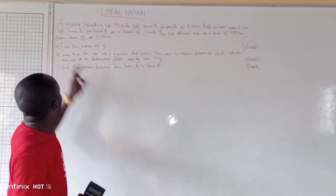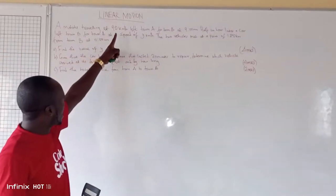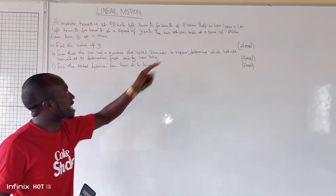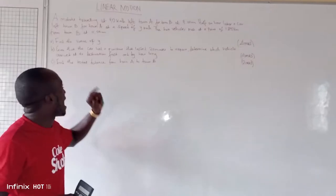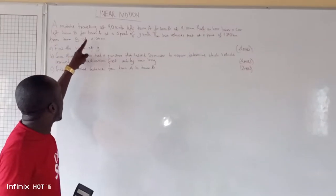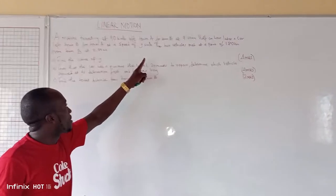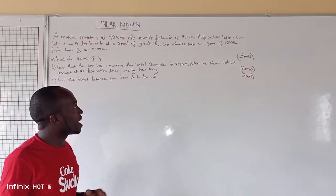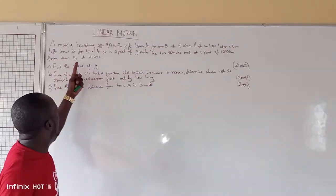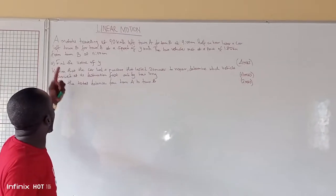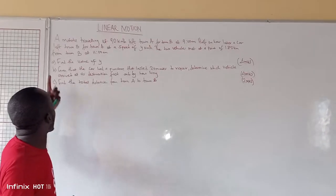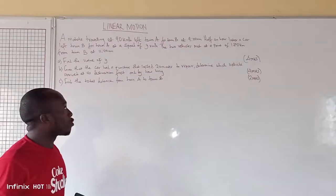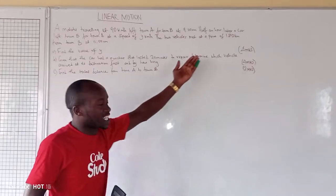The question reads: a matatu left town A for town B at 90 km per hour at 9 am. Half an hour later, a car left town B for town A at a speed of Y km per hour. The two vehicles met at a point 180 km from town B at 11 am. The first question is: find the value of Y, which is the speed of the car that we don't have.